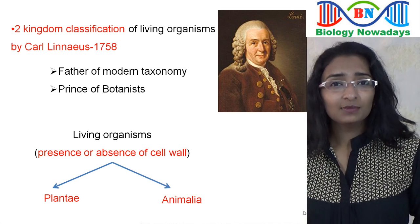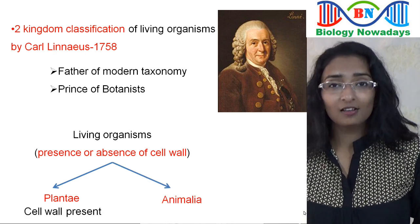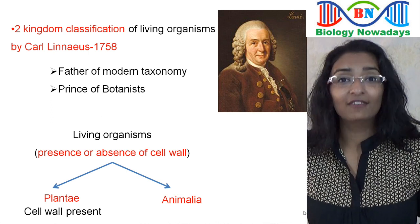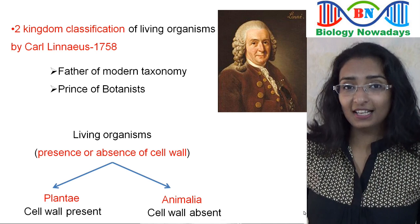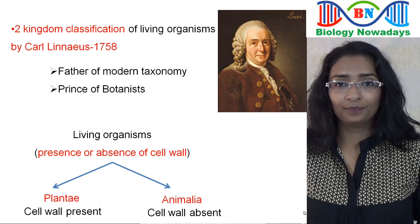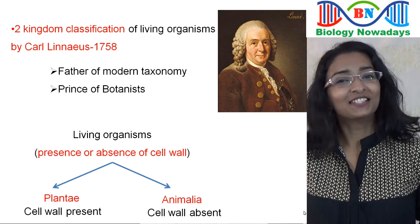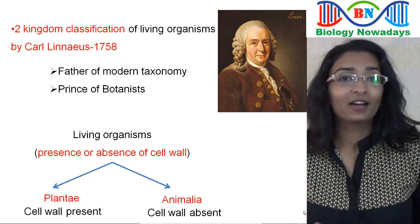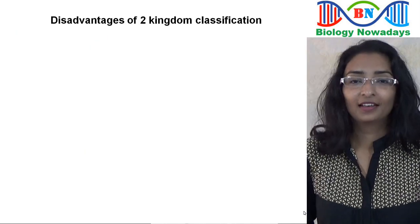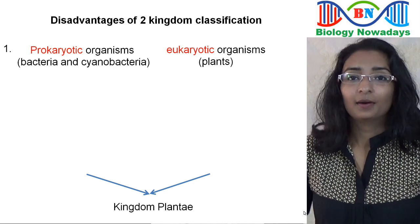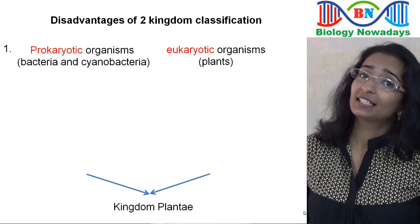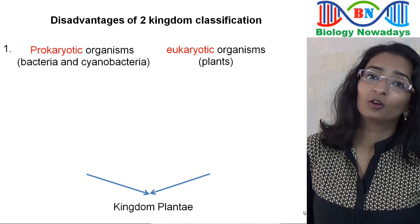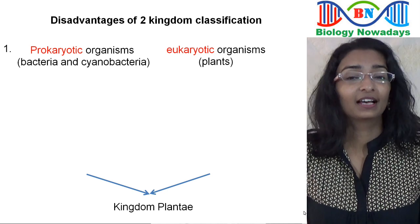Living organisms with a cell wall around their cell or cells were grouped into Plantae, and living organisms having no cell wall were grouped into Animalia. However, this classification had disadvantages. The first is that prokaryotic organisms such as bacteria and cyanobacteria were grouped along with eukaryotic organisms like plants.